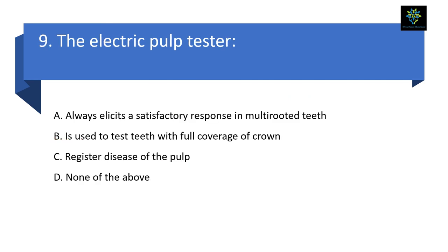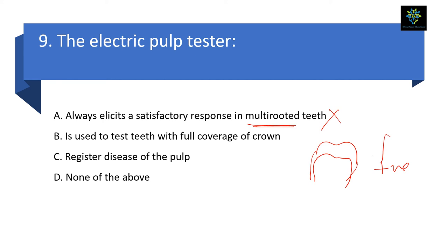Next question on electric pulp tester: Option A — it always elicits a satisfactory response in multi-rooted teeth; no, this is a limitation — it cannot give 100% accurate results in multi-rooted teeth. Option B — used to test teeth with full crown coverage; if the tooth is covered with a metallic crown, we can get a false positive result because metal is a conductor. Option C — registers disease of the pulp; yes, since we use the pulp tester to find the vitality of the pulp, it will definitely register disease of the pulp.